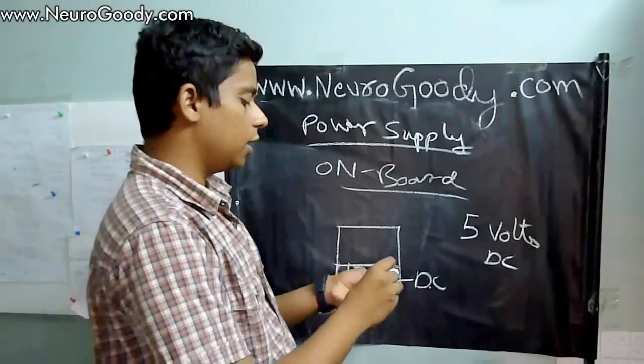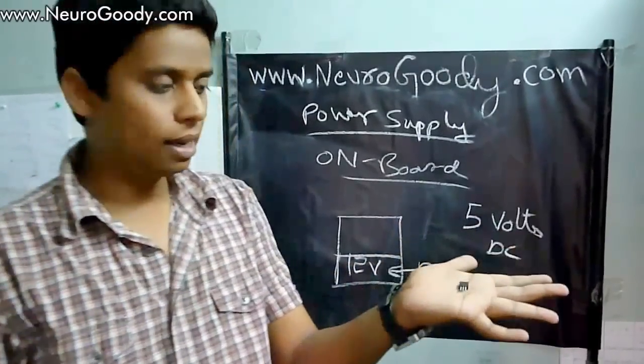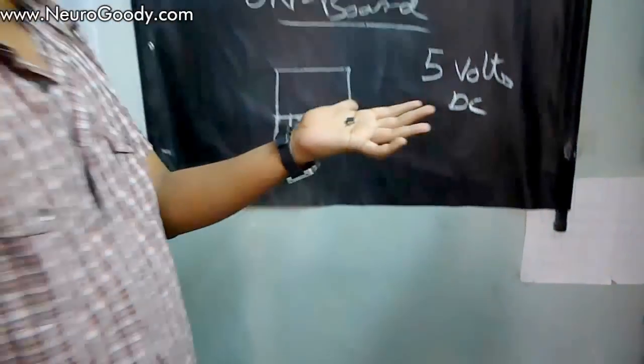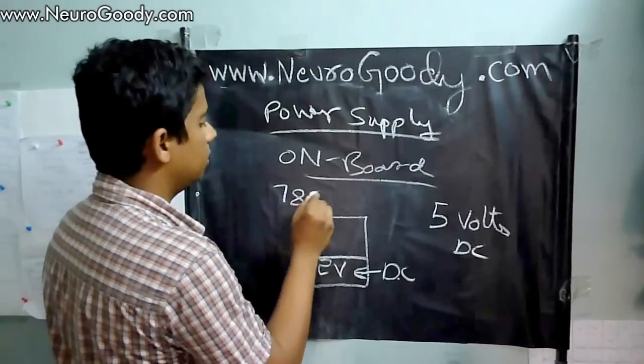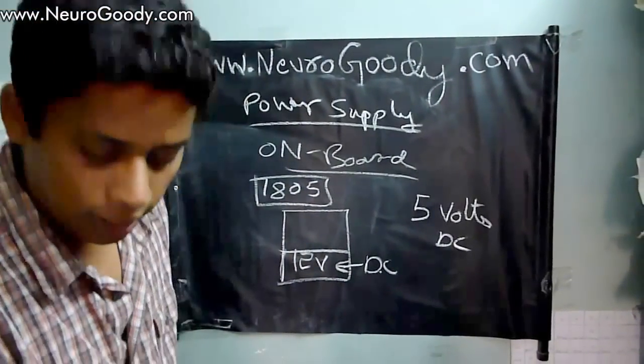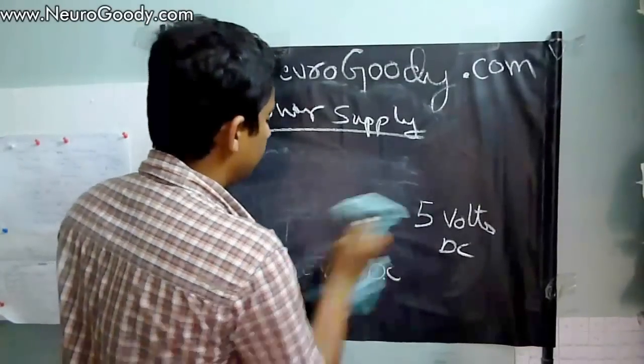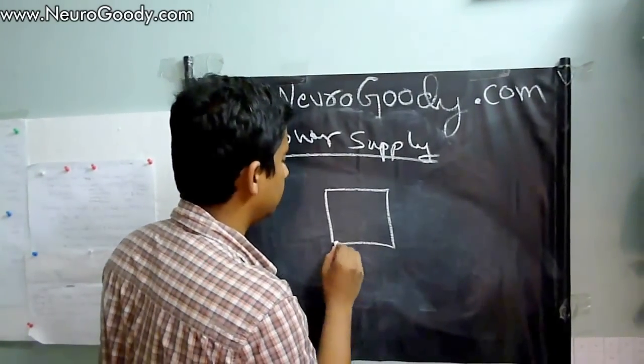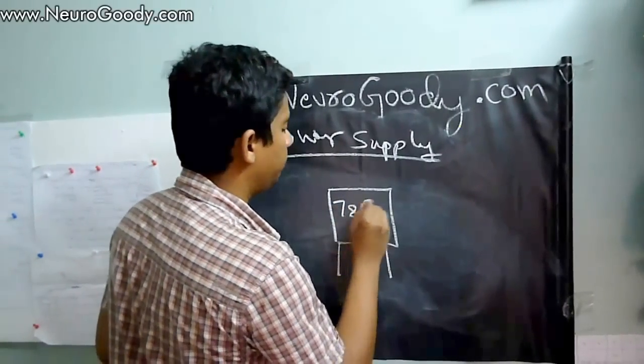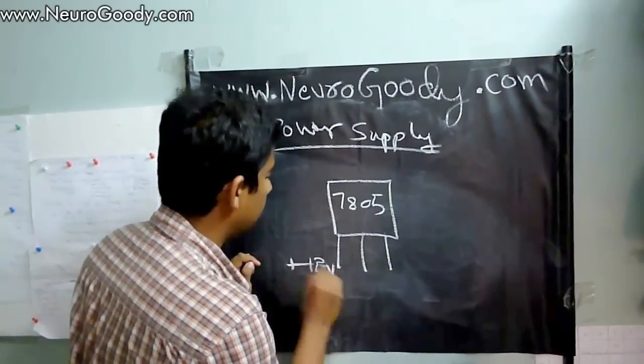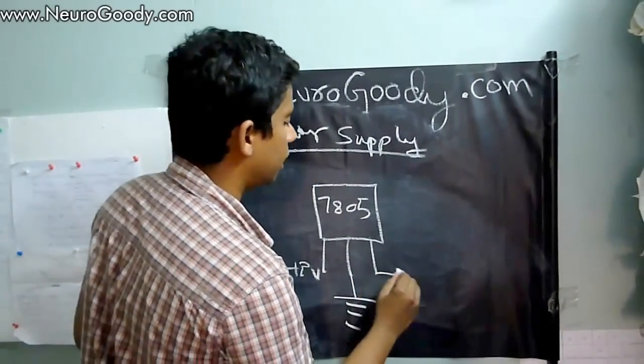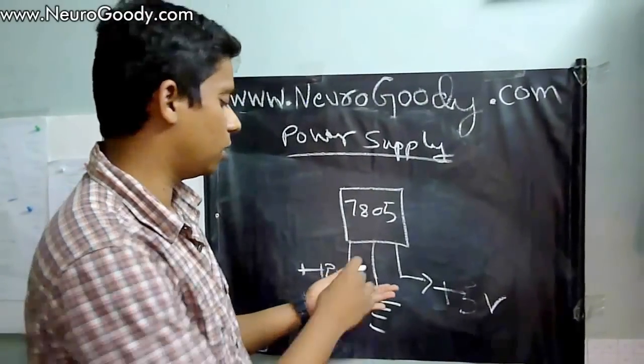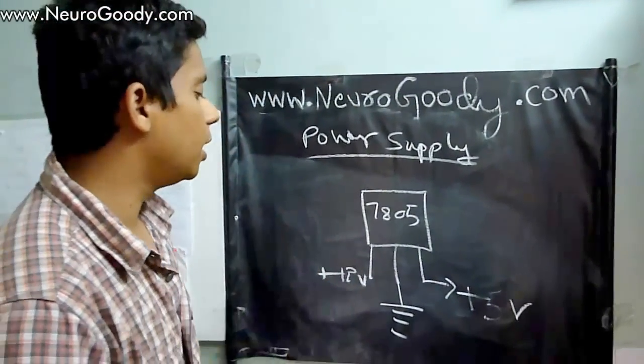Don't worry about that because you have a simple IC. The IC number is 7805. I will write the IC diagram here. All you have to do is give a 12 volt DC plus and minus to the IC. This is the IC - you have three pins. Just give 12 volts here, this is the ground point, and the IC will give you plus 5 volts. Wasn't that so easy? Just put a low cost and very reliable 7805 IC to get a reliable DC power supply for your robot.